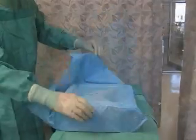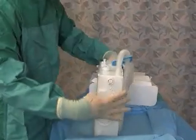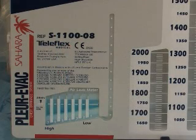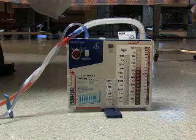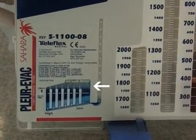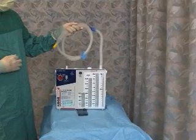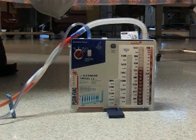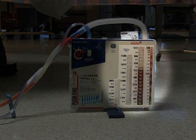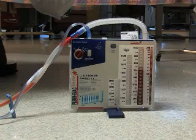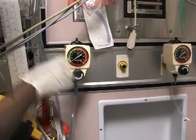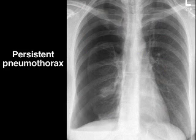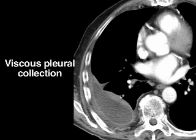Most commercially available drainage systems use the three-bottle model of closed drainage and suction. The most important bottle is the underwater seal, which serves as a one-way valve that allows air and fluid to leave the pleural cavity without risk of re-entry during inspiration. Bubbling in this bottle indicates an ongoing air leak from the patient or the system. The other bottles include a collection bottle for pleural fluid and debris, and a suction system connected to wall suction that regulates suction delivered to the pleural space via a column of sterile water. Suction may be applied if there is a persistent pneumothorax or a viscous pleural collection not draining effectively.